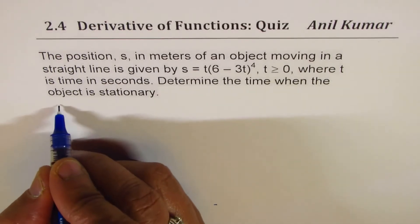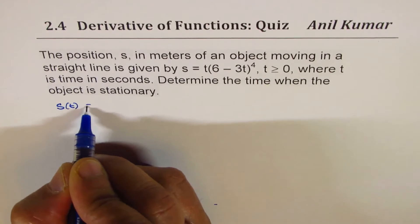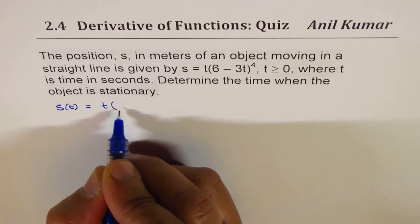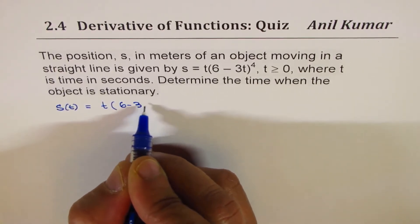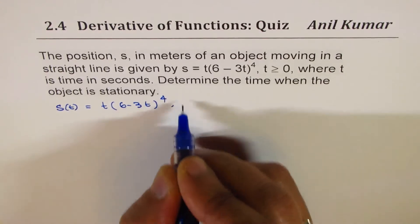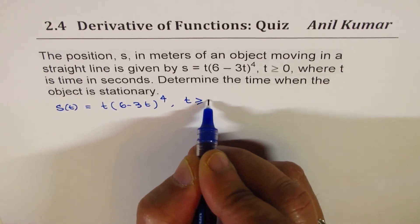So we are given the displacement function s of t, which is t times 6 minus 3t to the power of 4, and t will be greater than or equal to 0.